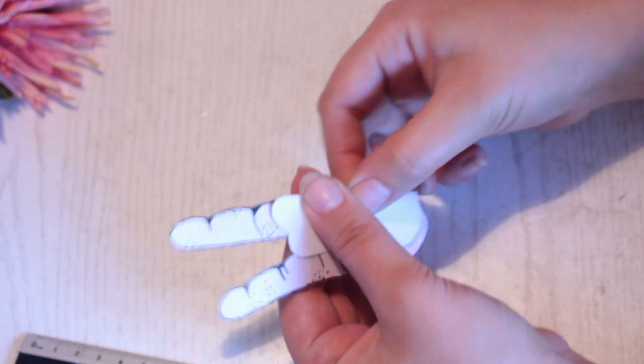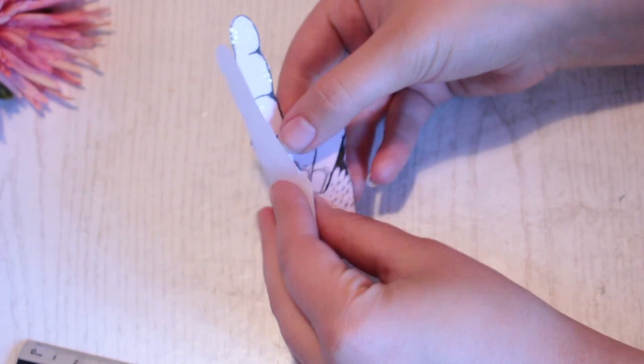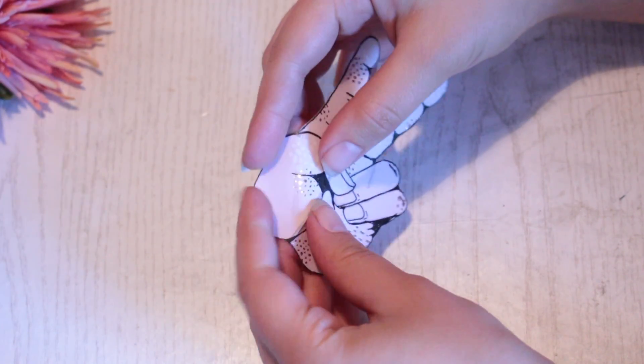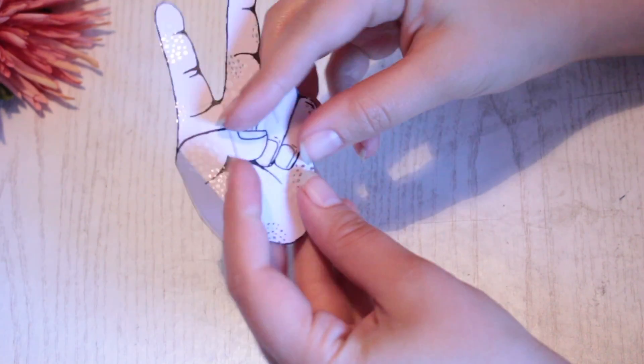Then refold everything to make all of the lines more obvious. Then reverse all of the folds so you're folding all of them backwards.